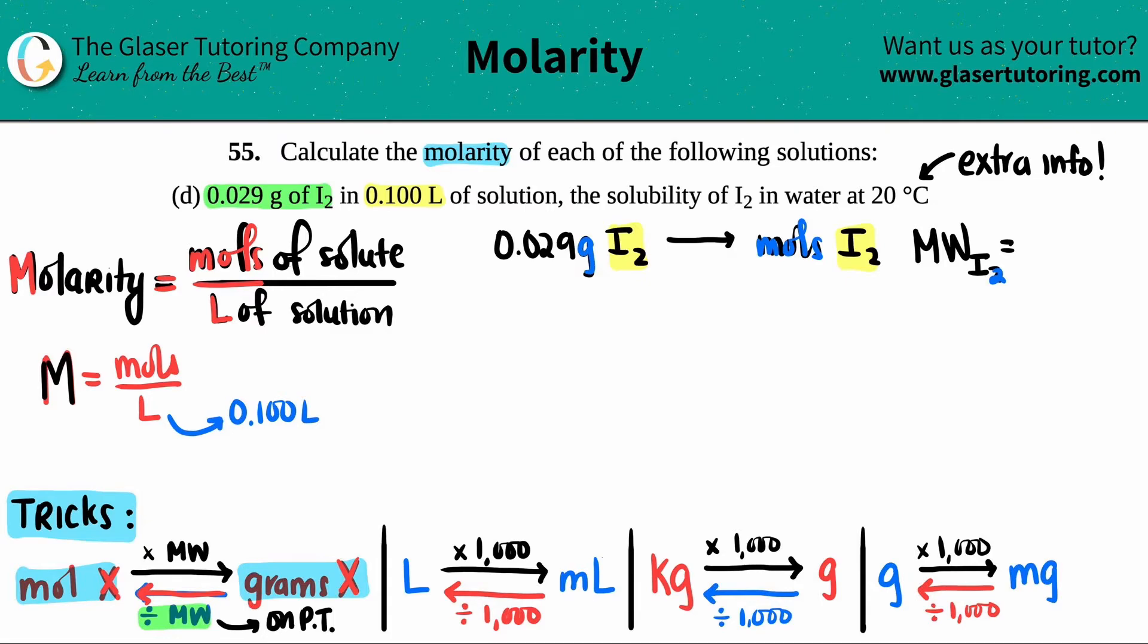Each iodine on my periodic table is 126.9, so I'm just going to times that by two. The whole molecular weight here would be 253.8, and that's in units of grams per mole. Now we can actually do the formula. I have grams, I just divide by the molar weight, and I will get my mole value. I'm going to take the grams I have, 0.029.